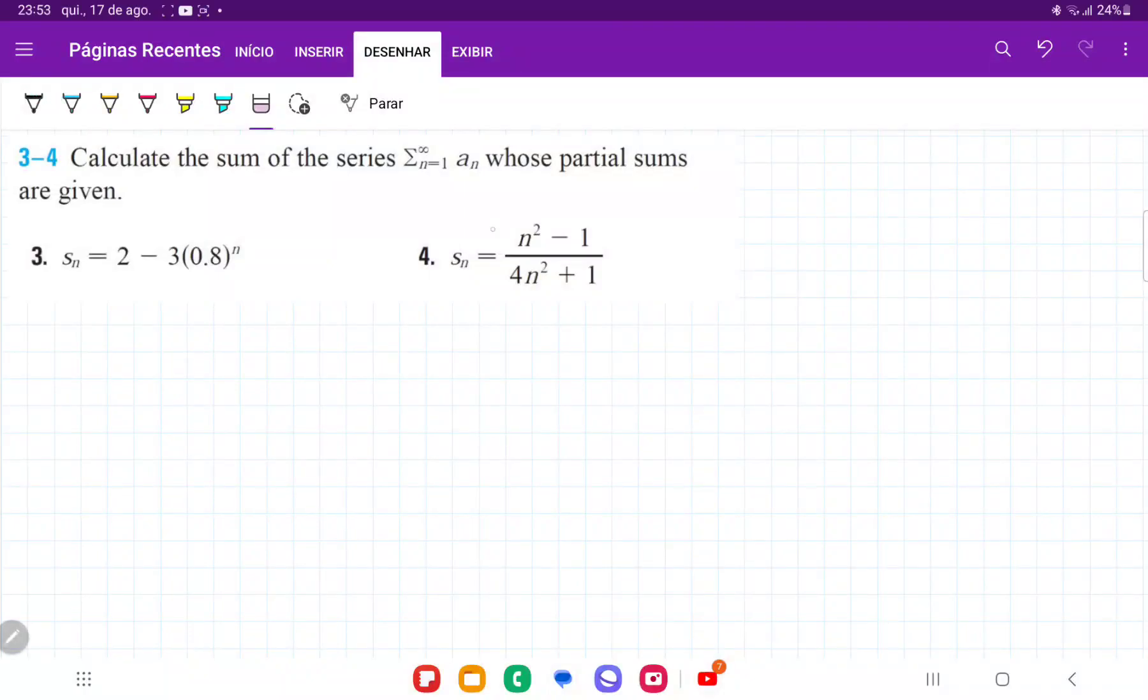For number 4, we want to calculate the sum of the series whose partial sum is given. This is the partial sum. What this means is that we have the sum of some sequence a_n, we don't know what that sequence is, and we're summing it from 1 to infinity.